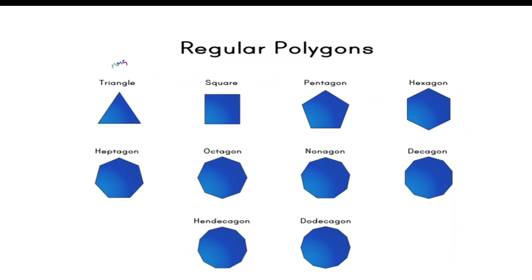Children, these are the examples of regular polygons. In a regular polygon, all angles are equal and all sides are also equal.